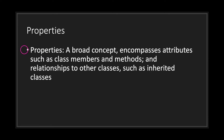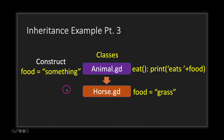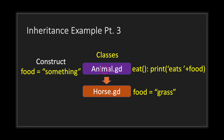When you inherit, a derived class has the ability to use member variables and methods from the base class. Let's take a look at an example. We have an animal class and a horse class. The horse class is the derived class and the animal class is the base class — so animal is the super class and horse is the subclass. The super class has a function called eat which prints a statement to console, and it has a member variable called food.